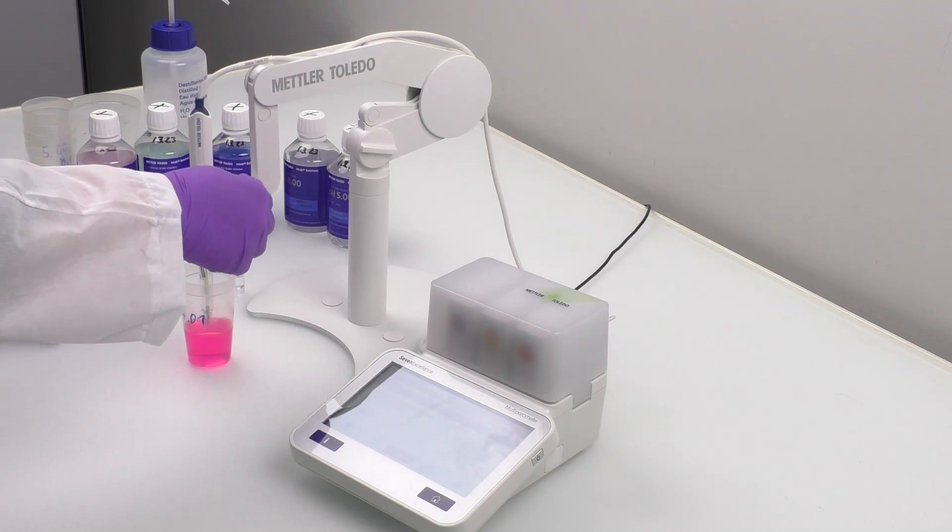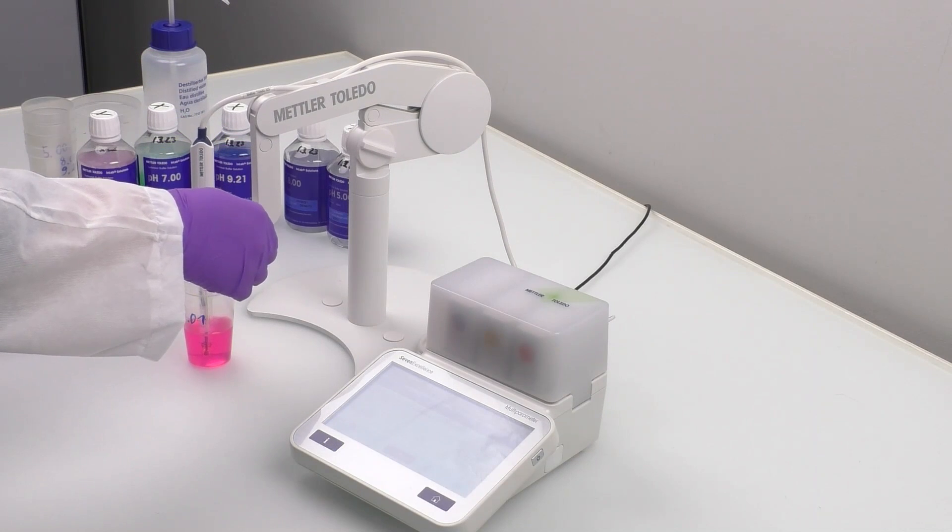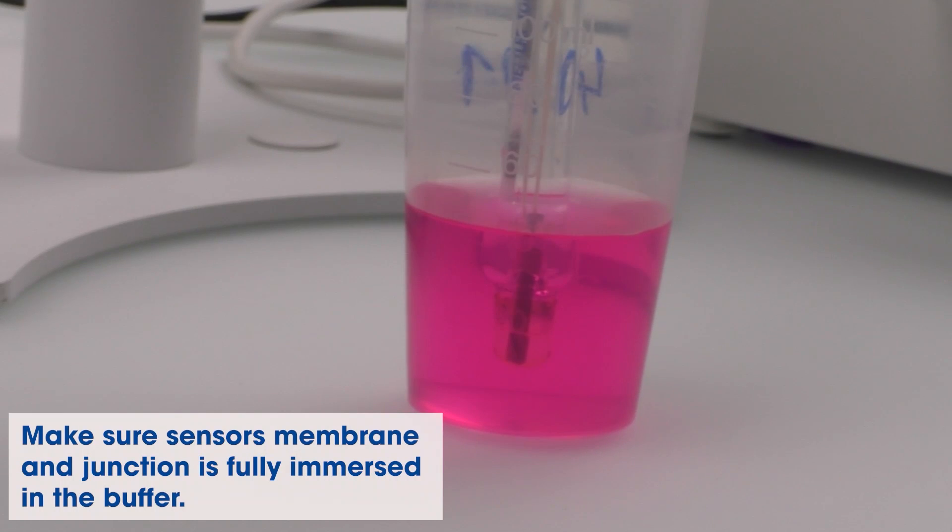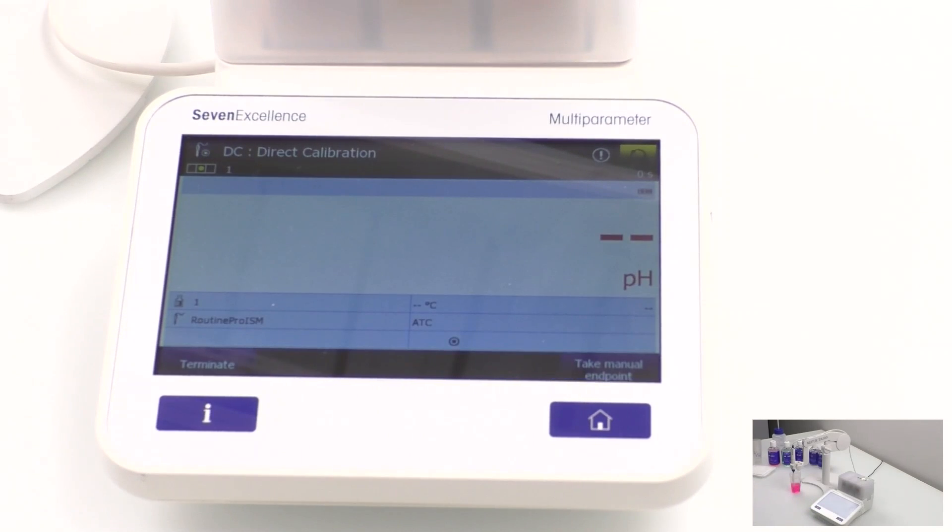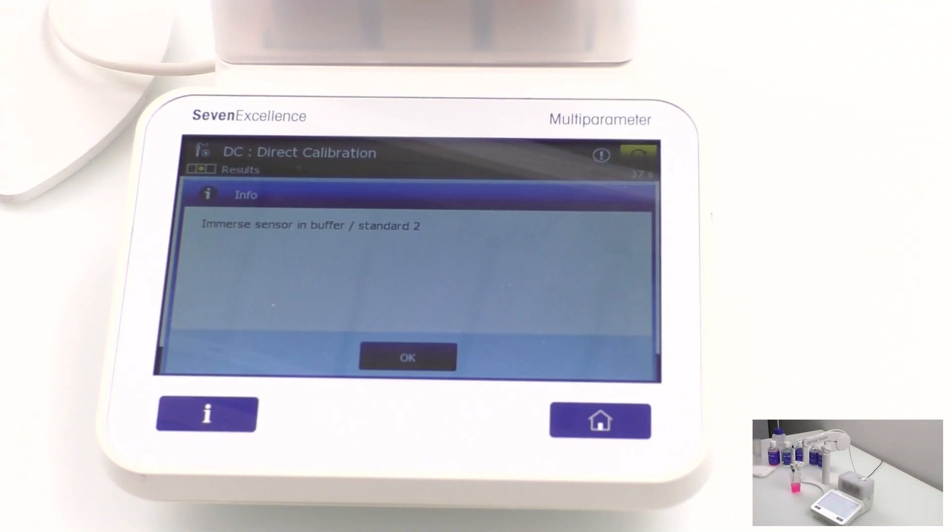Next, immerse the sensor into the beaker, making sure to fully submerge the sensor junction and membrane for accurate calibration results. Once that's done, click OK on the meter display to start the measurement. After the first point calibration is reached, you will see a pop-up prompting you to immerse the second buffer.